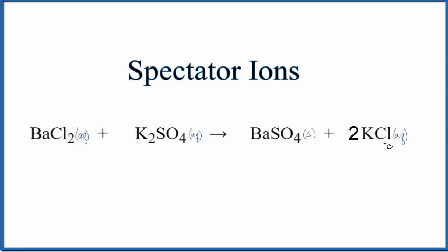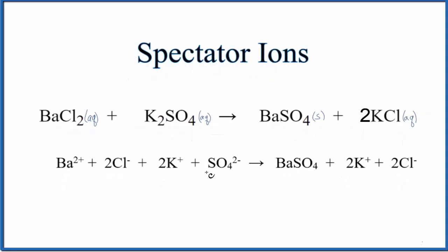If we break this up into the ions, just the ones that are aqueous and soluble, this is what we get. So this is what's called a complete ionic equation. It shows all of the ions and then it shows any solids here like this that we didn't split up.